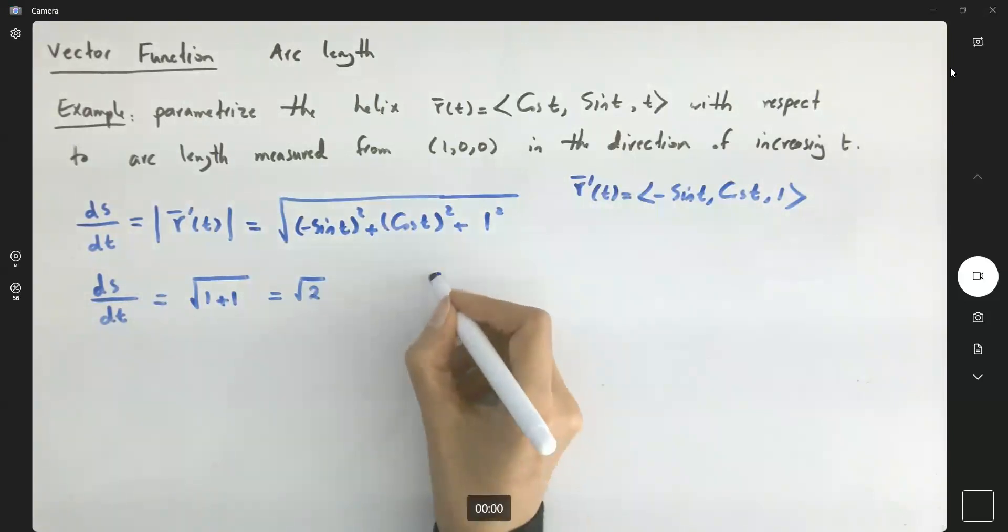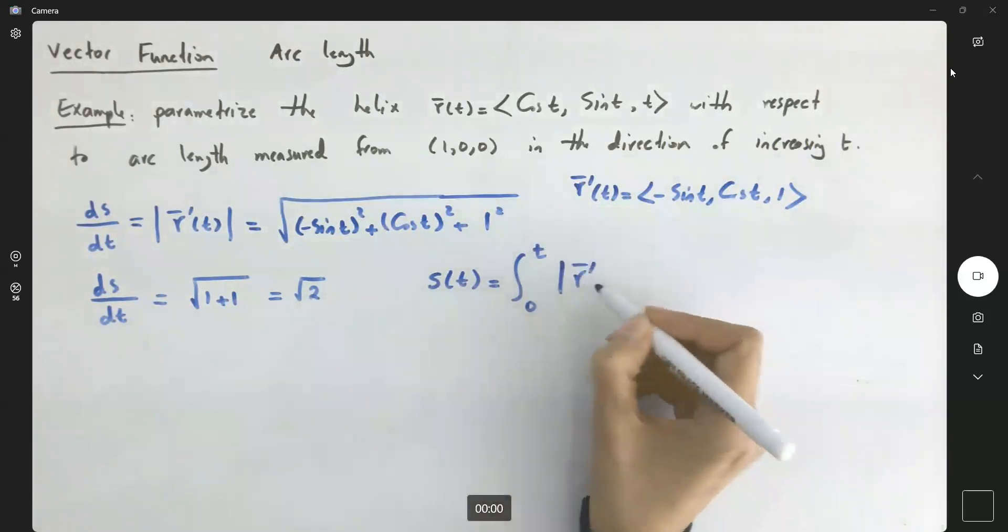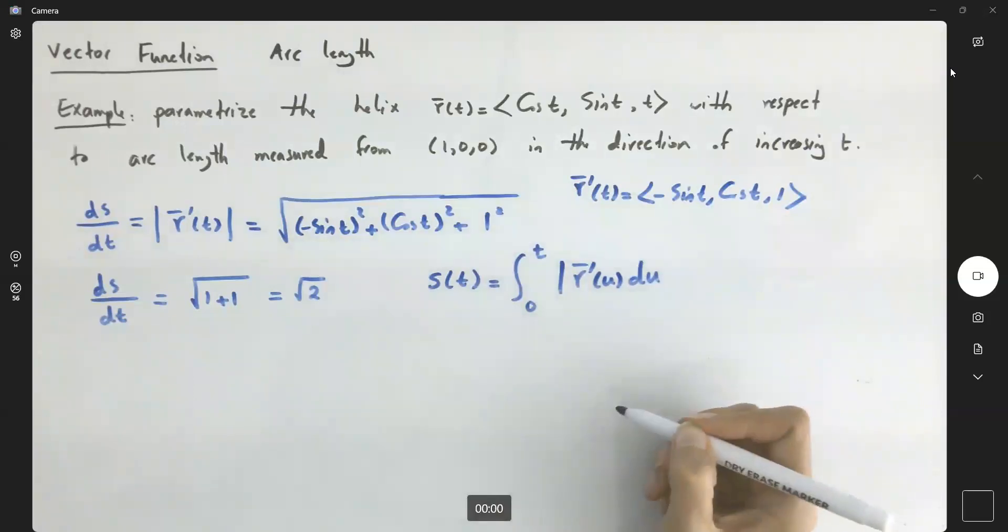Note that s(t) is equal to the integral from 0 to t of the magnitude of r prime of u, du. Now we just need to compute this integral.